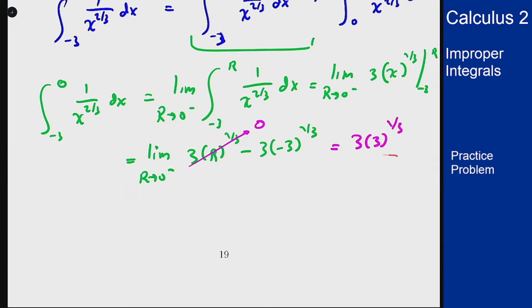We can do the same for the other integral, integral 0 up to 2 of 1 over x to the 2 thirds and the process here is the same. We just now have to limit our lower endpoint down to 0 instead of the upper one going up to 0.